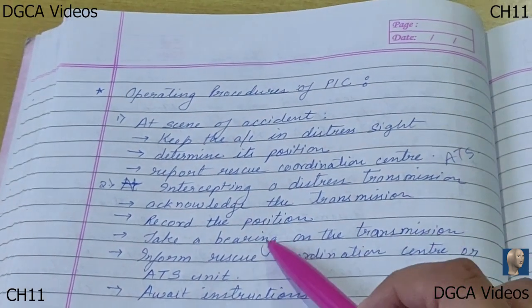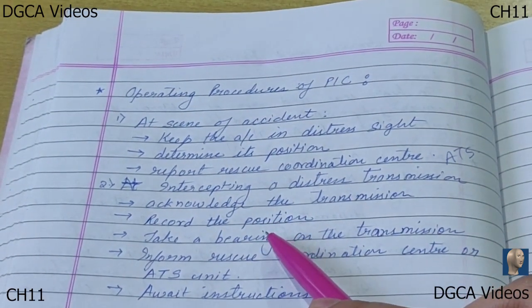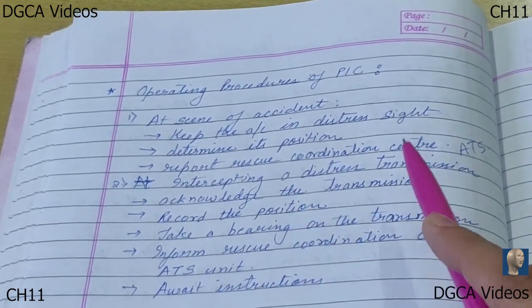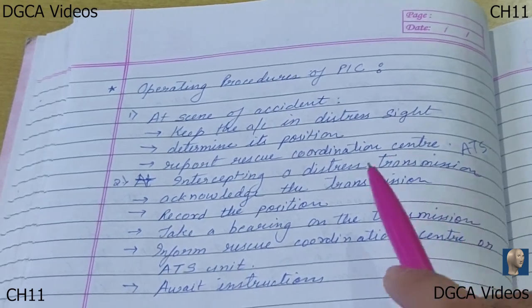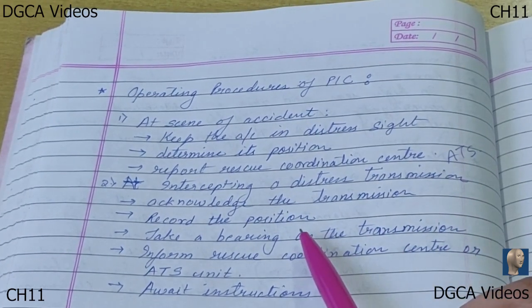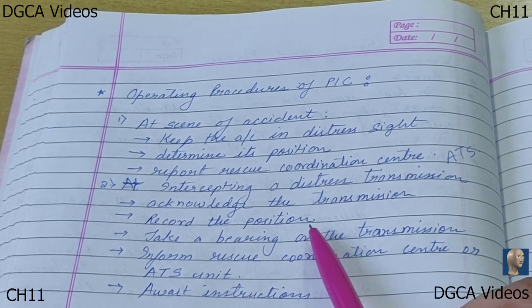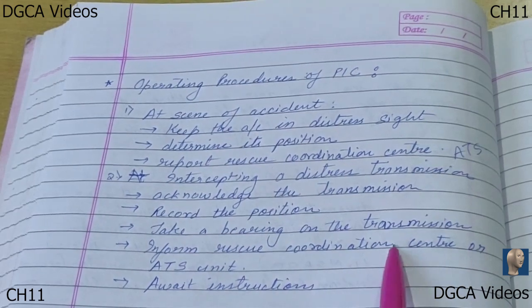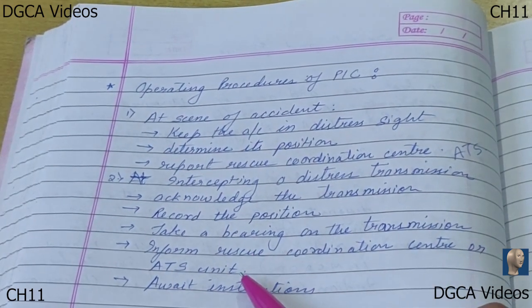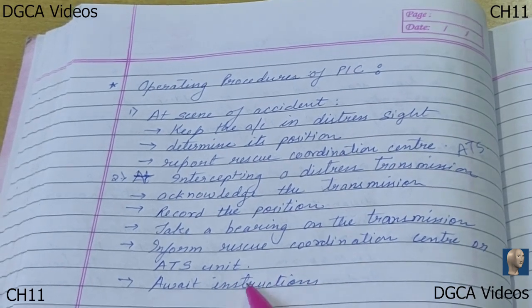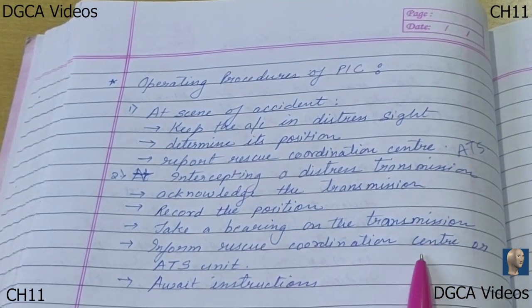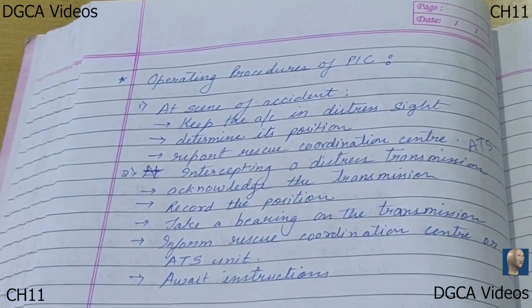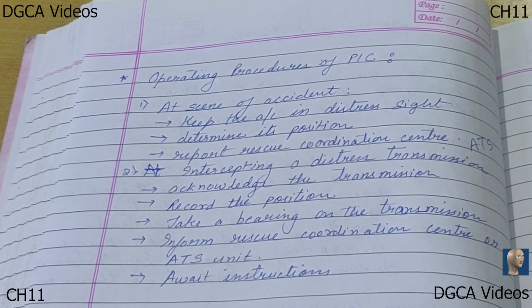If any aircraft intercepts a distress message, the pilot in command of that aircraft will have to acknowledge the distress message, record the position transmitted by it, and take a bearing on the transmission. They must then inform the appropriate rescue coordination center or the ATS unit, and await instructions from the rescue coordination center, ATS, or any further transmission.